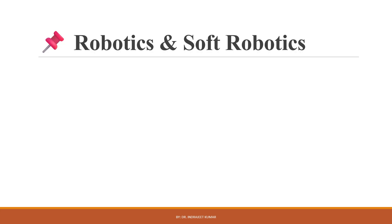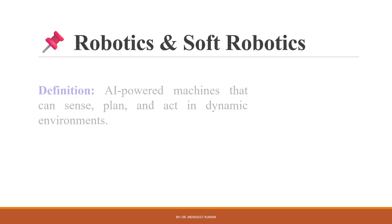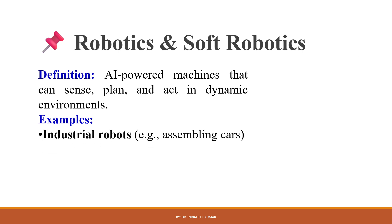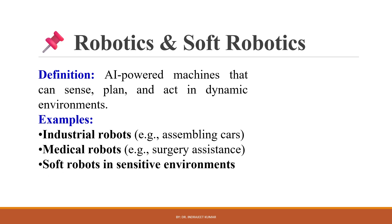Applications of AI in Robotics and Soft Robotics. AI-powered machines can sense, plan and act in dynamic environments. In robotics, AI helps robots recognize objects, avoid obstacles, and make smart decisions in real time. Examples include industrial robots, medical robots, and soft robots in sensitive environments. Soft robots are made of flexible material and are used in sensitive environments like healthcare, agriculture, and elderly care.